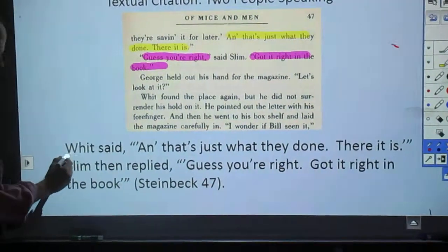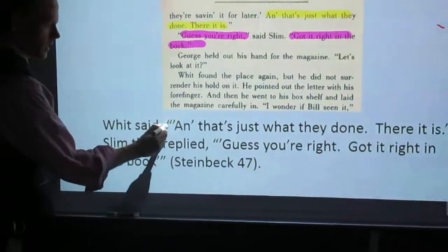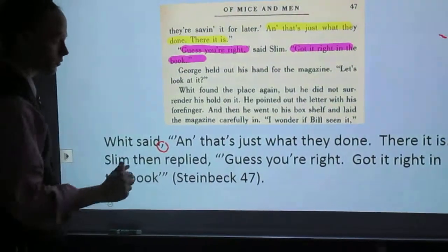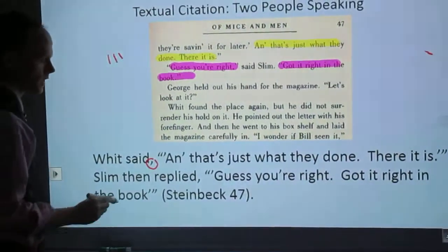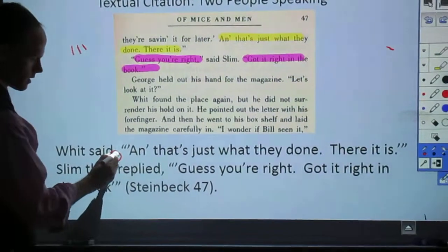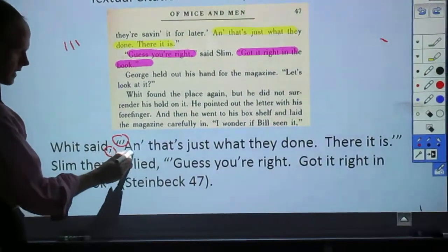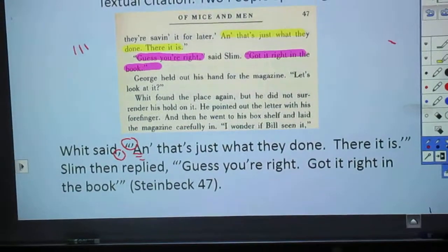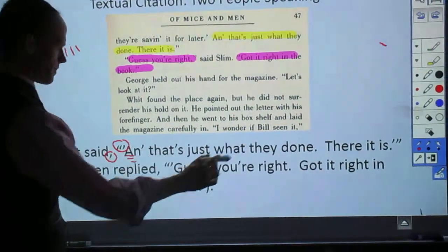So what we're going to say is Witt said, comma, space, and then since it's somebody speaking, it's going to be a 3Z — 1, 2, 3 — okay? You're going to go comma, space, 3Z, and then capitalize that first letter. And that's just what they've done.